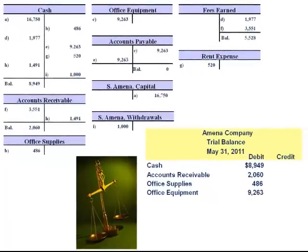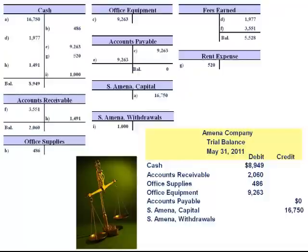Next, we include the liabilities — accounts payable — and even though there's a zero balance, I'm going to include it. We proceed to the equity accounts, listing the owner's investment account — her capital account with its $16,750 credit balance, and her withdrawal account with a $1,000 debit balance. The capital account has a normal credit balance as its purpose is to increase equity.